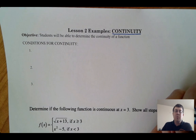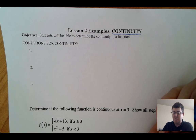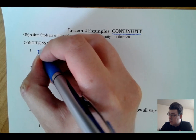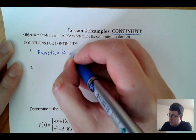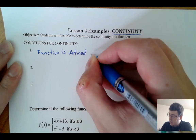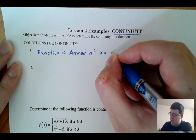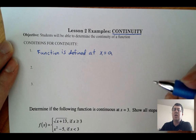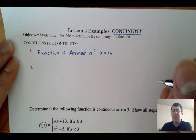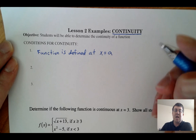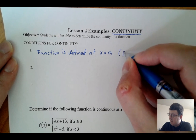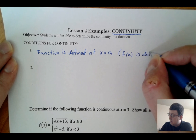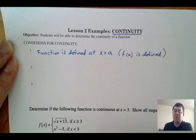Just as a review, there were three major conditions for continuity of a function. Number one was that our function is defined at a certain place x equals a. So what we're looking at for continuity is whether our function is nice and smooth and continuous. The first thing we need is the function to be defined at the certain point we're looking at — f of a is defined. If we plug in that x value of a, it's going to be defined.